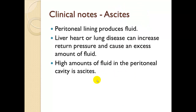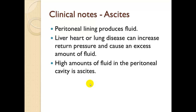Clinical note: Ascites. The peritoneal lining produces fluid, and liver, heart, and lung disease can increase back pressure and cause an excessive amount of fluid. If we think of the peritoneal space as a third space, right heart failure or liver failure creates a clogging of the portal circulation system, which all gets detoxified through the liver before re-entering the circulatory system. This increases back pressure and causes fluid to spill into the peritoneal space. High amounts of fluid in the peritoneal cavity is ascites — the stomach tends to have characteristics of a waterbed, with lots of very mobile fluid.